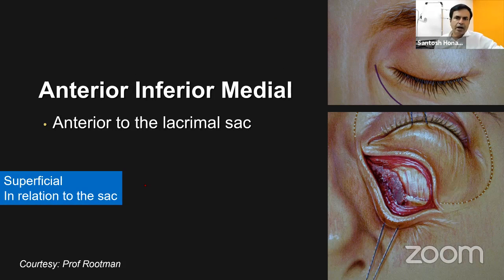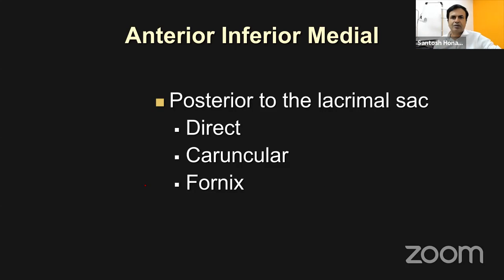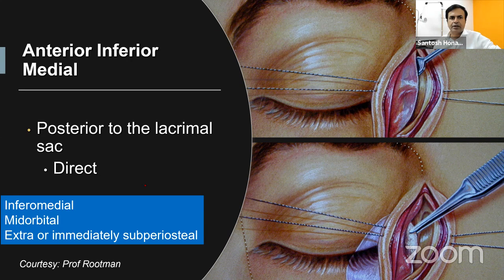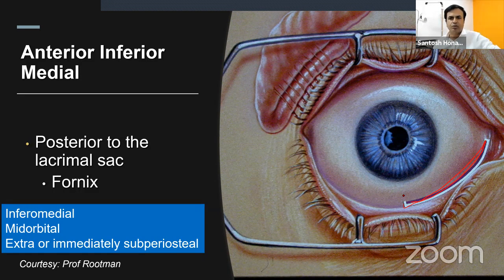For the anterior inferior medial approach: if the lesion is anterior to the lacrimal sac, stay anterior to it; if posterior to the lacrimal sac, go through the caruncle or fornix as a direct approach. For inframedial mid-orbital extraconal lesions, a medial transconjunctival approach or transcanalicular approach can be used. The transcanalicular approach is excellent — make an incision at the plica or between plica and caruncle, angulate a blunt scissors at 45 degrees, and reach posterior to the posterior lacrimal crest without disturbing the lacrimal sac.